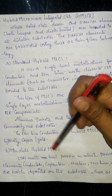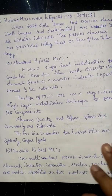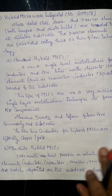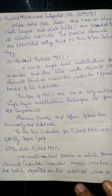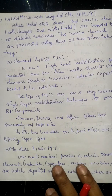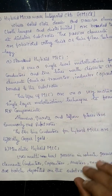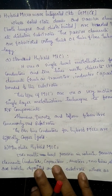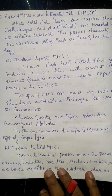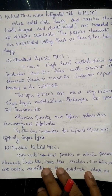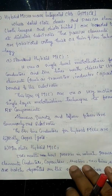The second category is miniature hybrid MICs. In miniature hybrid MICs, multi-level metallization is used, unlike the single layer metallization in standard hybrid MICs. Because of this multi-level metallization, miniature hybrid MICs have a smaller size compared to standard hybrid MICs.